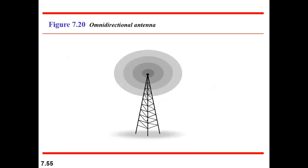Here is just an example of an omnidirectional antenna. You have an antenna and it's propagating the radio waves in all directions. Radio waves normally use an omnidirectional antenna.